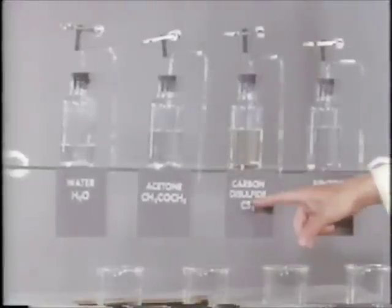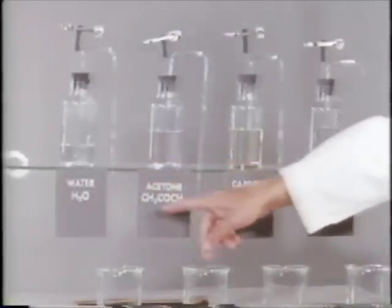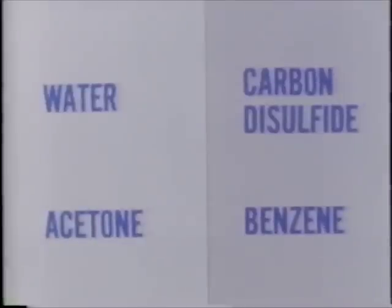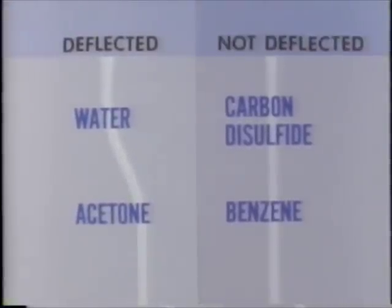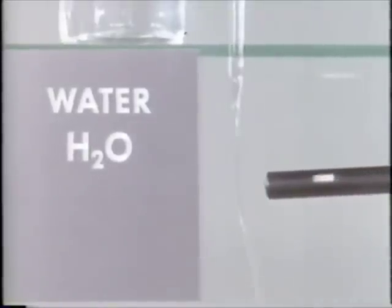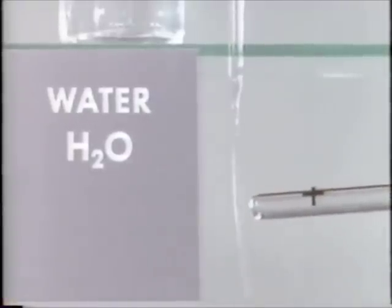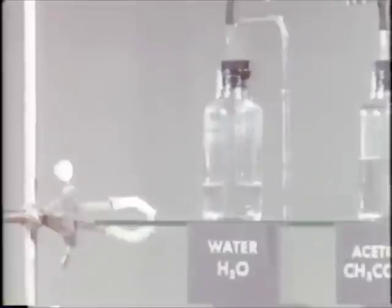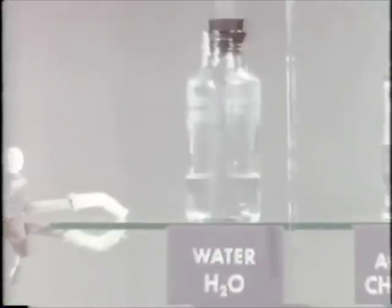So we see that some liquids are not deflected by either kind of charge, while other liquids are attracted by both positive and negative charges. Why? Water and acetone are deflected; carbon disulfide and benzene are not deflected. How can we account for these different electrical properties? To answer this question, let's see if we can construct a model on the molecular level that accounts for the deflection or lack of deflection in these experiments.